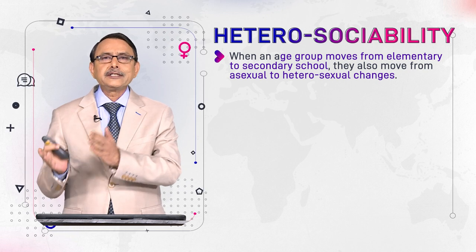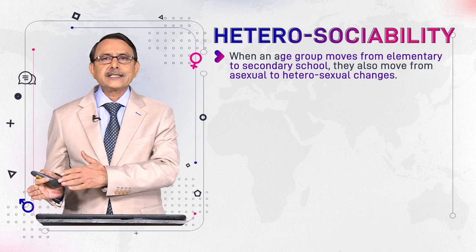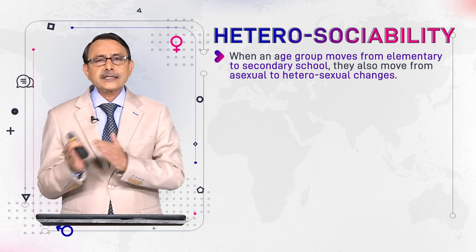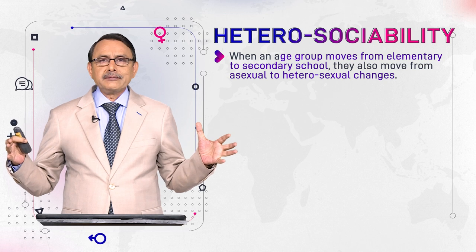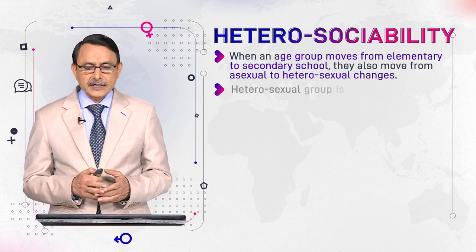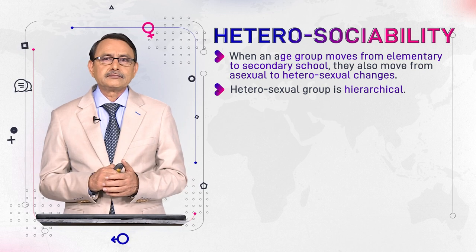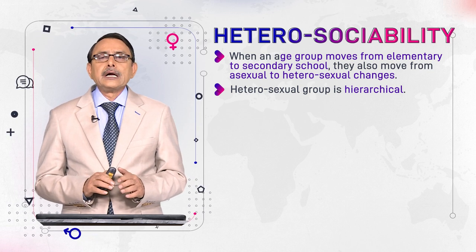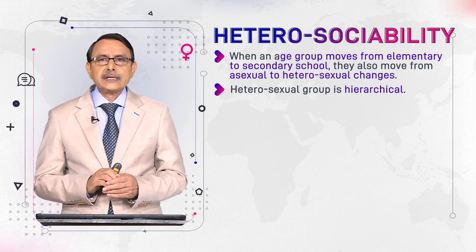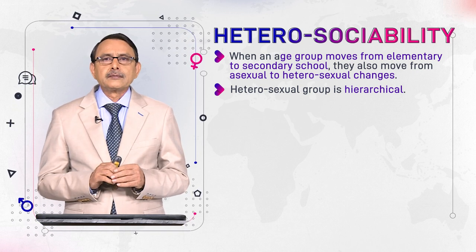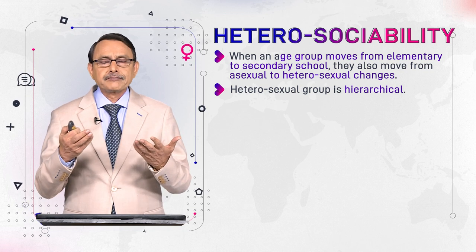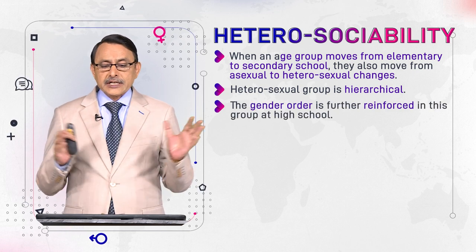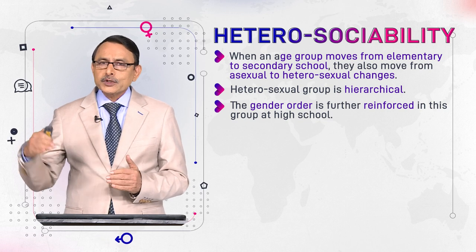Both stages — from elementary to secondary and from asexual to heterosexual — these two developments go side by side. The heterosexual group is hierarchical. If the society believes in gender difference and male domination, where males are superior to females, there is hierarchy and the gender order promotes this hierarchy.